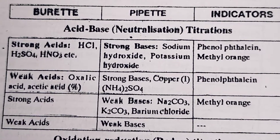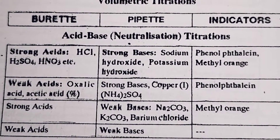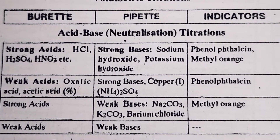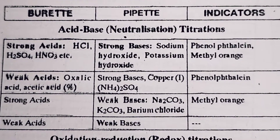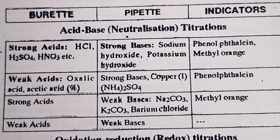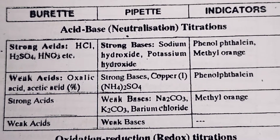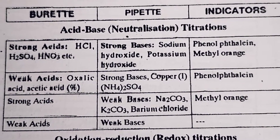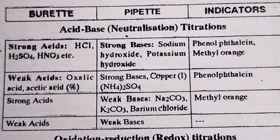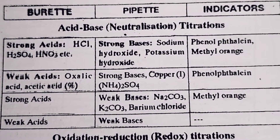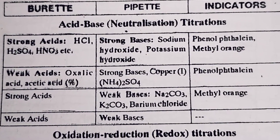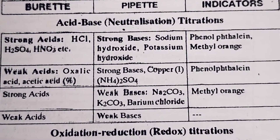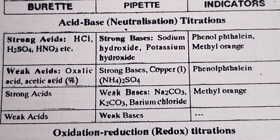The first type is acid-base titration, which involves neutralization. Strong acids include HCl (hydrochloric acid), H2SO4 (sulfuric acid), and HNO3 (nitric acid). Weak acids include oxalic acid and acetic acid.